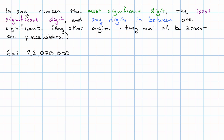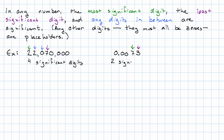Now that we know the most and least significant digits, the significant digits are the most significant digit, the least significant digit, and any digits in between. Any other digits must be zeros and are placeholders. For example, in 22,070,000 with no decimal point, the least significant digit is the 7 and the most significant digit is the first 2, with two digits in between — giving four significant digits. For 0.0073, the most significant digit is the 7 and, with a decimal point, the least significant is the 3, with nothing in between — two significant digits.